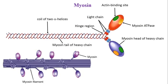Myosin has an approximate length of 1500 to 1600 Ångströms and a very high molecular weight of about 500,000. Each myosin molecule is made up of two parts: one head segment and one tail fragment.